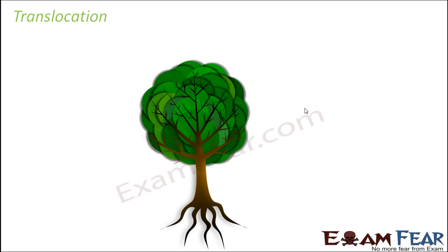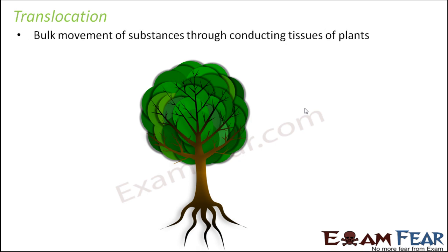We now introduce a new term called translocation. Translocation is the bulk movement of substances through the conducting tissues of plants — that is, the xylem and phloem. In diffusion, we talked about movement of individual particles or pairs in the same or opposite direction — uniport, symport, antiport. But in translocation, we talk about movement of substances in bulk, in mass. This mass flow happens through the xylem and phloem of plants.